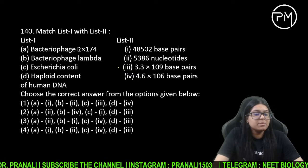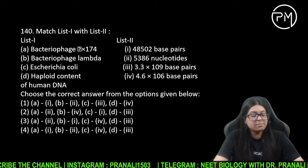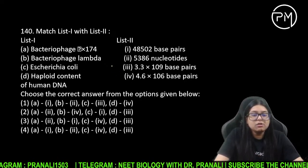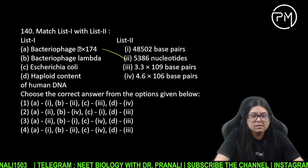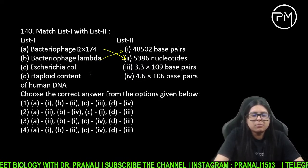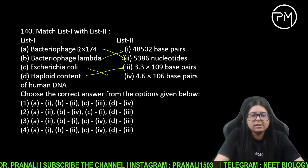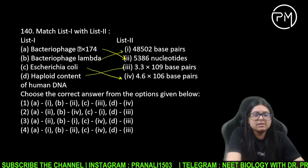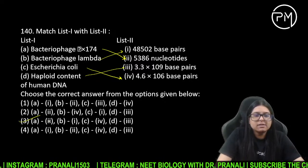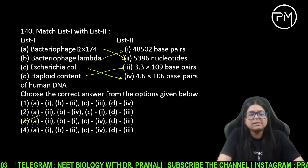Molecular basis of inheritance mein second page pe diya hua hai. Bacteriophage ke baare mein bataya hai — haploid content of the DNA. Aur yeh raha E. coli. Toh 140 ka answer 3 ho gaya hai — yeh toh yaad karna padega ki kis mein kitna hota hai.